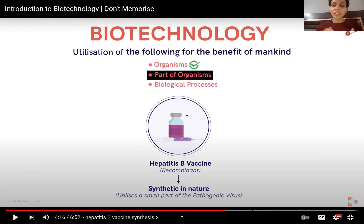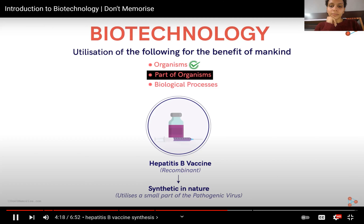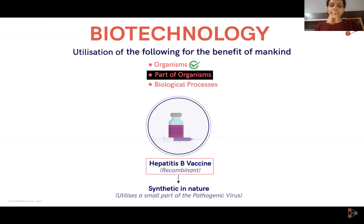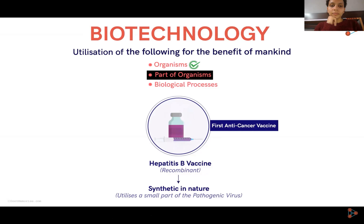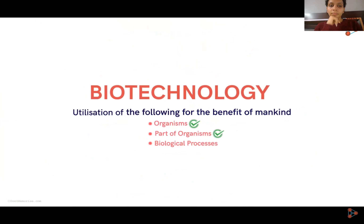This is just to increase your interest in the topic — biotechnology is a field of biology responsible for so many additional benefits. With the recombinant hepatitis B vaccine, it is nearly impossible to get infected with hepatitis B after injection. It is also known as the first anti-cancer vaccine because it has been proven to help reduce chances of developing liver cancer. This is one example of how a part of an organism can be used for product development.